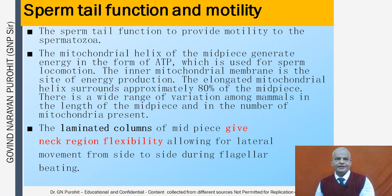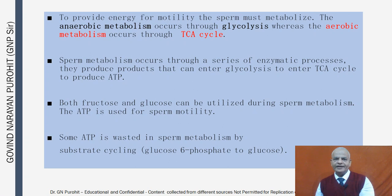The sperm tail provides motility to the spermatozoa. The mitochondrial helix of the midpiece generates energy as ATP for sperm locomotion. The inner mitochondrial membrane is the site of energy production. The elongated mitochondrial helix surrounds approximately 80% of the midpiece. The laminated columns of the midpiece give the neck region flexibility for lateral movement during flagellar beating.